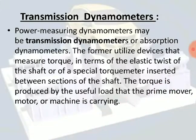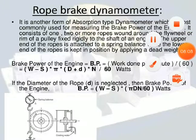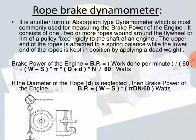Now, what is a rope brake dynamometer? The rope brake dynamometer is another form of absorption dynamometer, most commonly used for measuring the brake power of the engine. It consists of one, two, or more ropes wound around the flywheel or rim of a pulley fixed rigidly to the shaft of the engine.